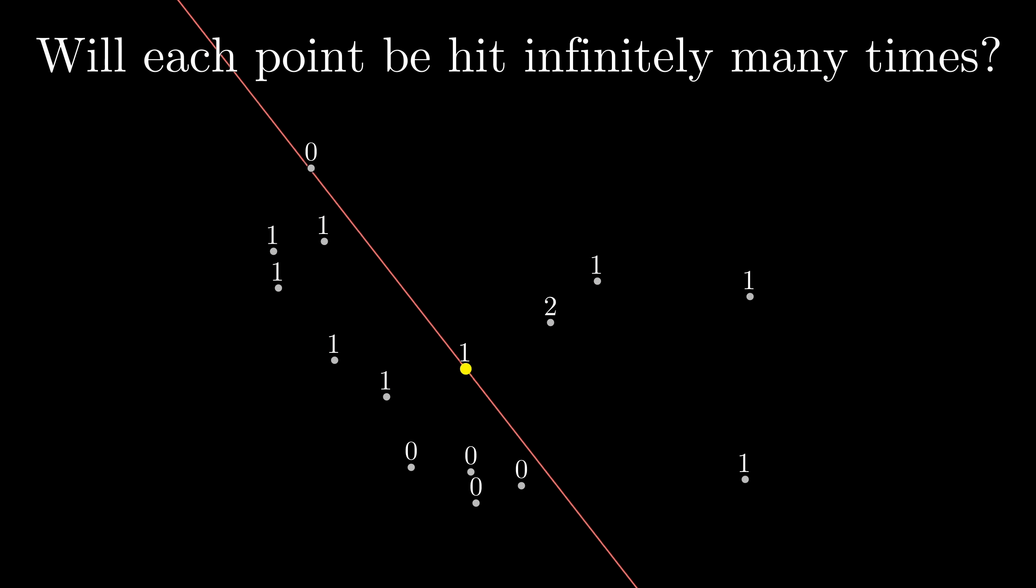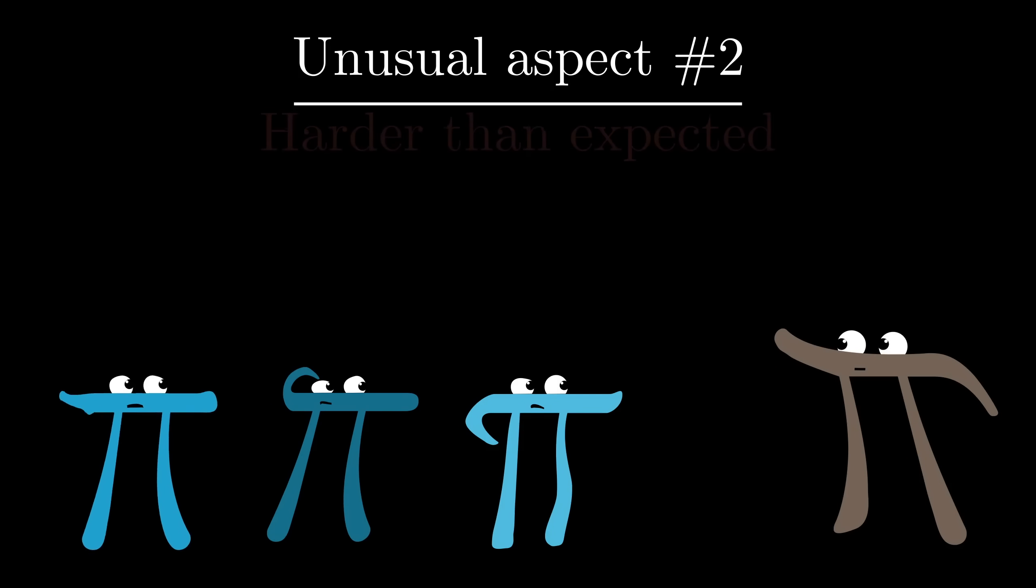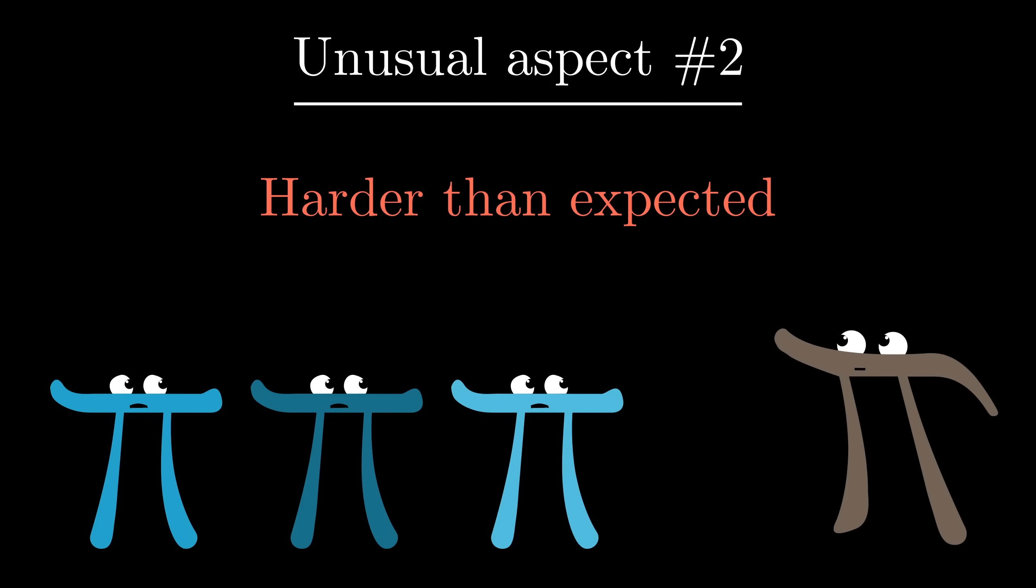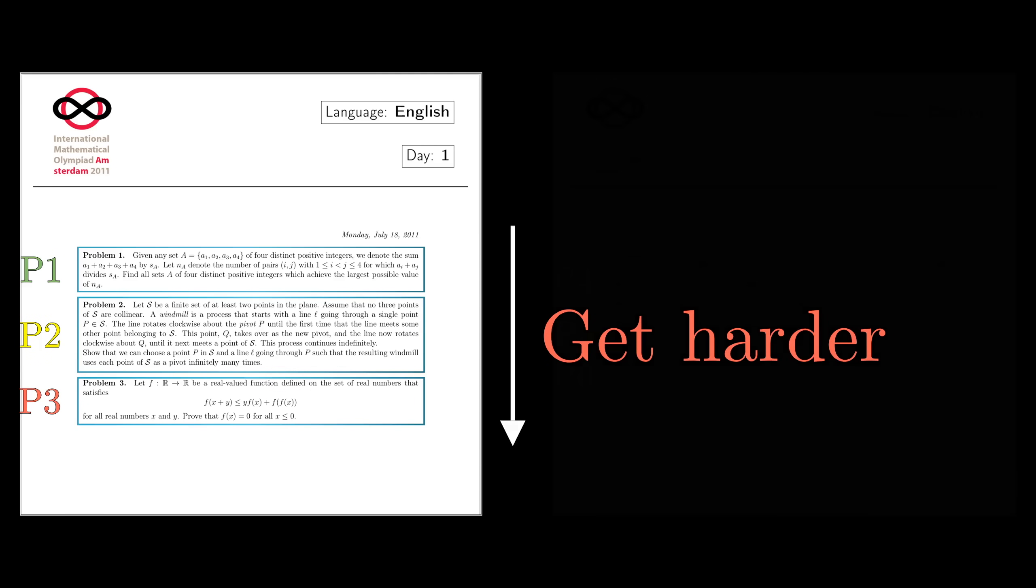Proving that some initial condition will result in this windmill hitting all the points infinitely many times, well, that doesn't test your knowledge of a particular theorem. It tests if you can find a clever perspective. But that blade cuts both ways. Without resting on an existing result from math, what could possibly prepare someone to study for something like this? And in fact, that brings us to the second unusual thing about this problem. Based on the results, I'm guessing that it turned out to be much harder than the contest organizers expected. You see, typically, the three problems each day are supposed to get progressively harder. They're all hard, of course, it's the IMO.